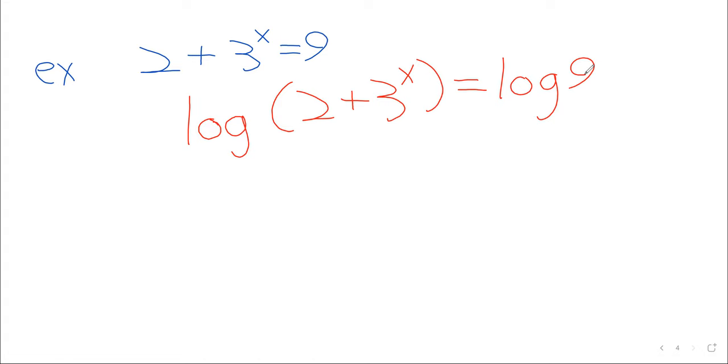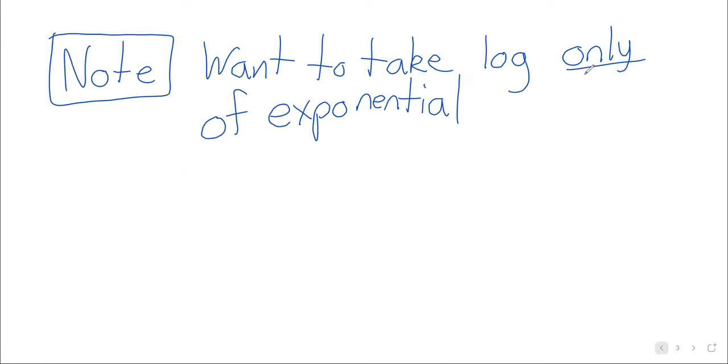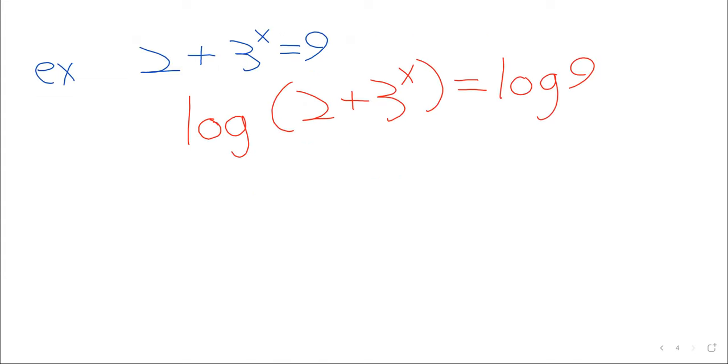but there's no way to proceed from here. This rule tells us what to do if we have the logarithm of a power. It does not tell us what to do if we have a logarithm of a power and then some other stuff. So that 2 is a problem. We need it not to be there.